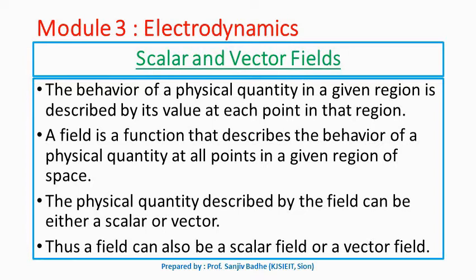Such quantities are called scalar quantities. In contrast, there are many physical quantities that have magnitude and direction both. Such quantities include displacement, velocity, acceleration, force, momentum, angular momentum, etc. These quantities are called vector quantities.